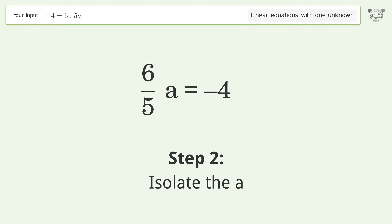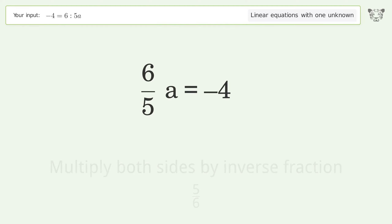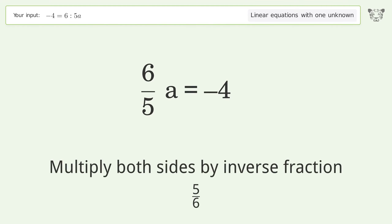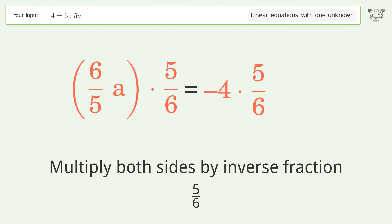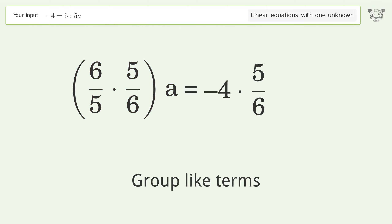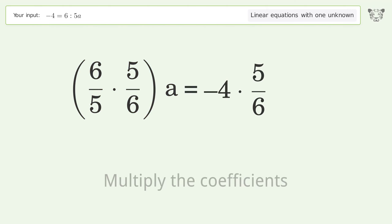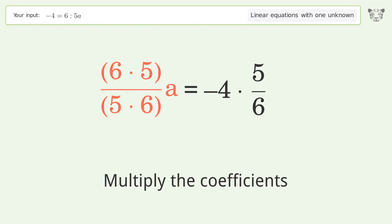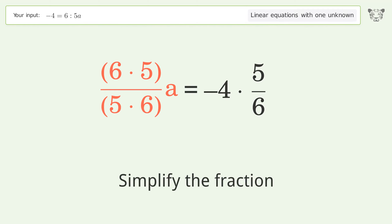Isolate the a — multiply both sides by the inverse fraction, 5 over 6. Group like terms, multiply the coefficients, and simplify the fraction.